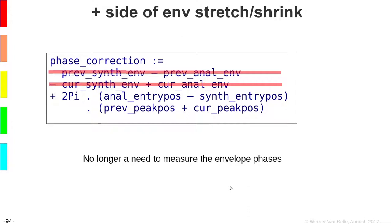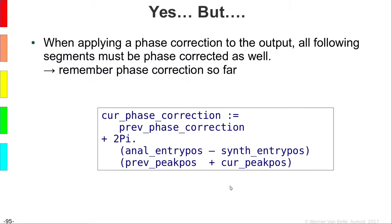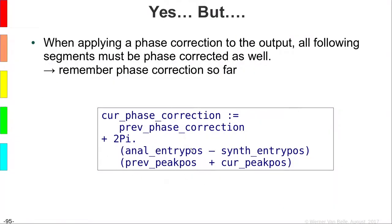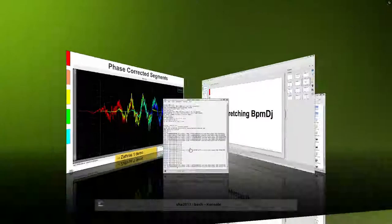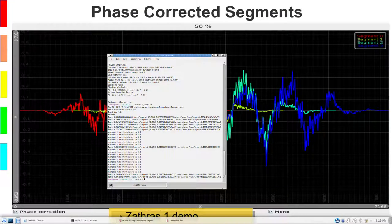With the phase correction determined, apply it to the just-synthesized peak. This correction carries forward in time — each subsequent frame must accumulate corrections. The current phase correction equals the previous phase correction added to the carrier wave phase correction term. And this is how it sounds when done correctly — played slowly so you can see the segments are actually in alignment.